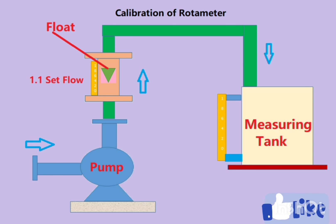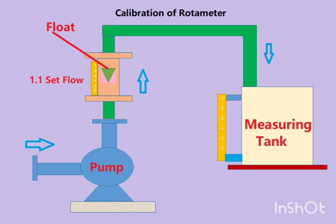Suppose we want to calibrate this rotameter for four liters per hour flow. We start the pump, set the float at four liters per hour rate, and start collection at the measuring tank. After one hour, we stop the pump and check what amount of liquid we received in the measuring tank. If it is four liters, our rotameter is 100% accurate. If it is higher or lower, our rotameter is showing error. This is a very simple manual calibration setup.